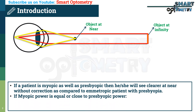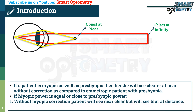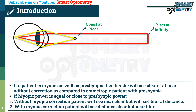If myopic power is equal to or close to presbyopic power, there are two possibilities. One: without myopic correction, the patient will see near clearly but will see blur at distance. Two: with myopic correction, the patient will see distance clearly but near will be blurred.